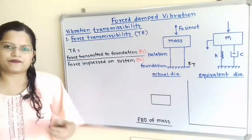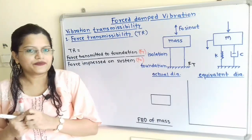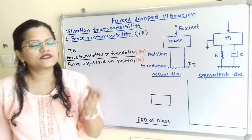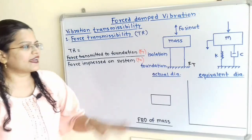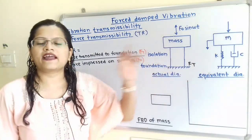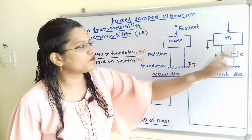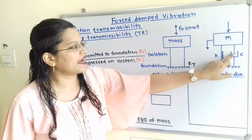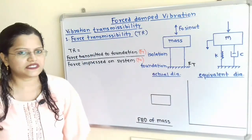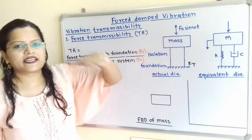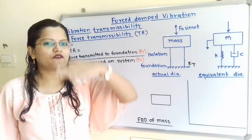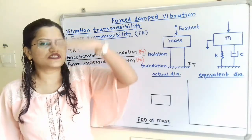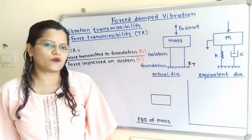This is the actual diagram. We will draw the equivalent diagram. The isolator absorbs the vibration — it will act as a spring with stiffness K and also as a damper with damping coefficient C. So instead of the isolator, we place a spring with stiffness K and damper with damping coefficient C. The vibrations take place in both the upward and downward directions.